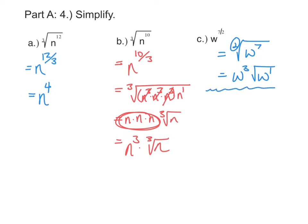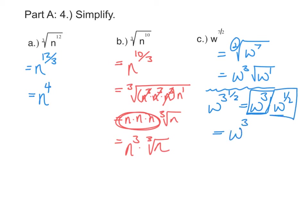Another way we could look at this — and we could have done this in the last example as well — is to look at w to the seven halves. Seven halves is three and one half, and three and one half is three plus one half. So we could break that up into w to the third times w to the one half. As a mixed number, that power splits up into two parts: w to the third is the part outside the square root, and w to the one half is what's inside the square root.